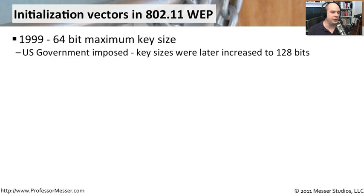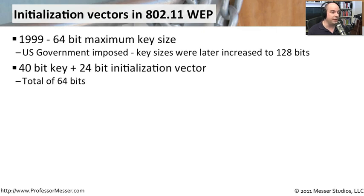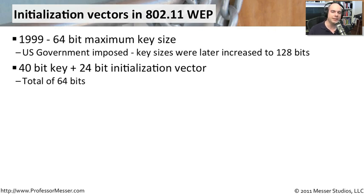The initial key sizes were only 64 bits. Later on that was increased to 128 bits, but at that point it became a bit more of a problem. What we ended up having was really a 40-bit key. And because the initialization vector is also part of the key, 24 bits were set aside for the initialization vector, totaling 64 bits.